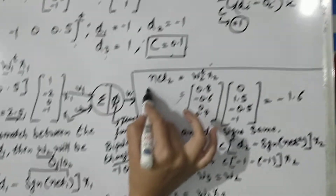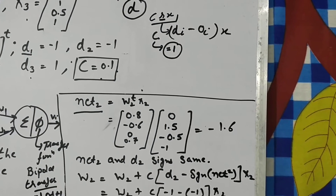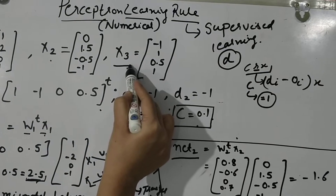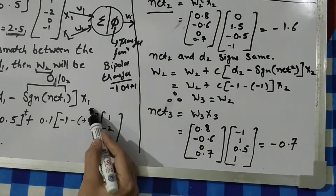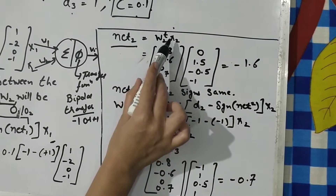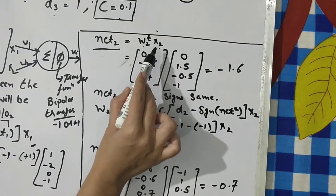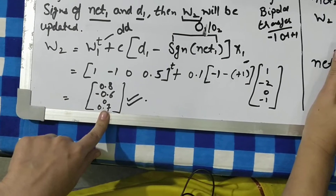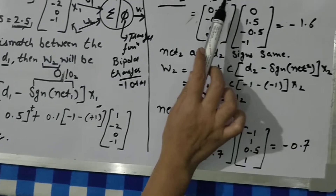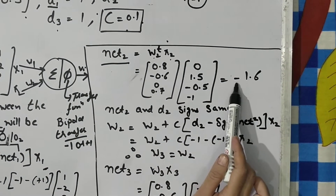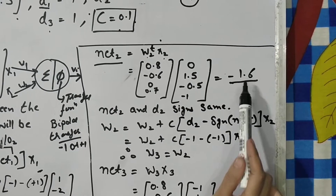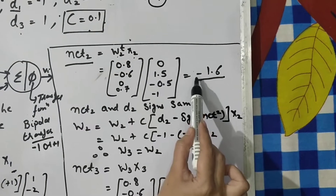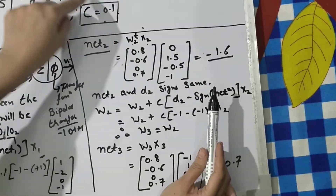Next, we evaluate net2. We repeat this process for all three given inputs (x1, x2, x3). Using the formula w2 transpose times x2, we plug in the newly computed w2 values — which are 0.8, -0.6, 0, and 0.7 — along with x2, and perform the matrix multiplication. This gives us a value of -1.6, which is negative.